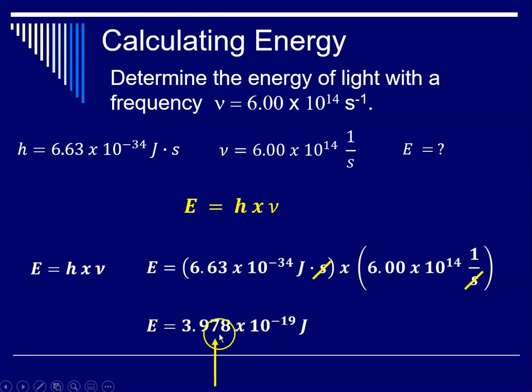So to end it with 3 sig figs would be at the 7, but the number immediately following it is an 8. So we're going to have to round that. That gives us 3.98 times 10 to the minus 19th joules. So if we know the frequency, we can calculate the energy.